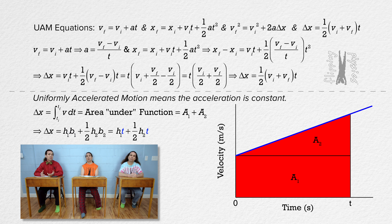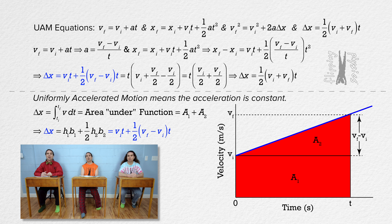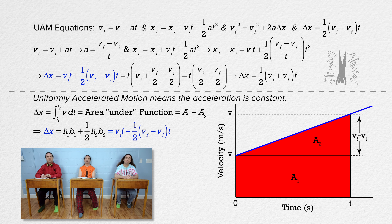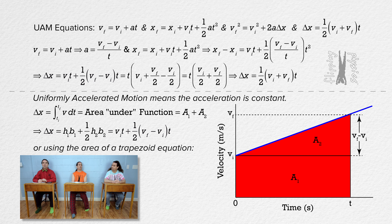The height of area 1 is velocity initial, and the height of area 2 is velocity final minus velocity initial. That is the same equation we had halfway through the last solution, so this also gives us the same uniformly accelerated motion equation. Actually, we could have just used the equation for the area of a trapezoid. What is the area of a trapezoid equation? Area of a trapezoid equals one half times the quantity base 1 plus base 2, all times height.